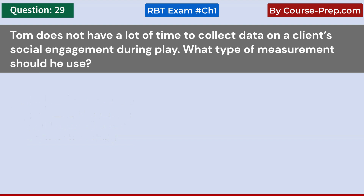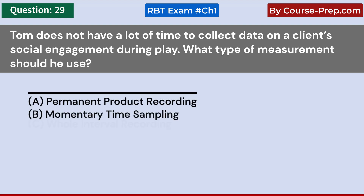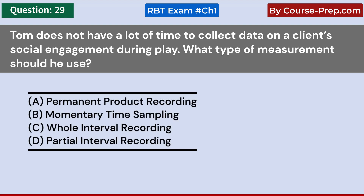Tom does not have a lot of time to collect data on a client's social engagement during play. What type of measurement should he use? A. Permanent product recording. B. Momentary time sampling. C. Whole interval recording. D. Partial interval recording. Answer B: Momentary time sampling.